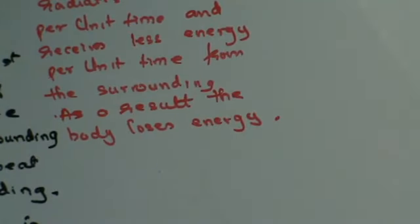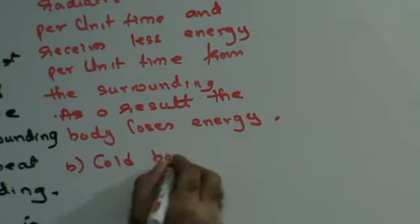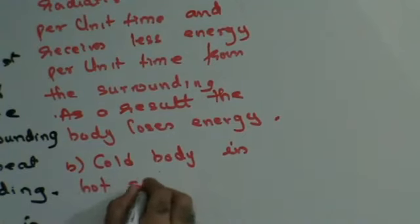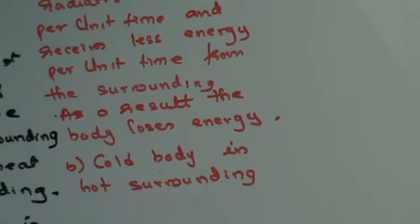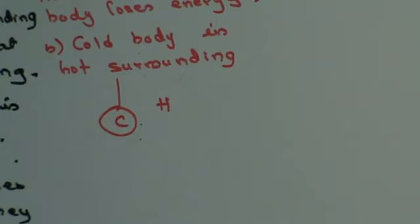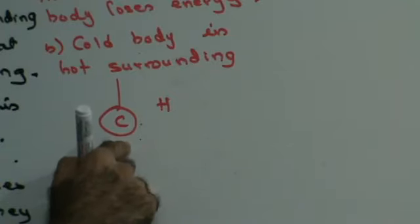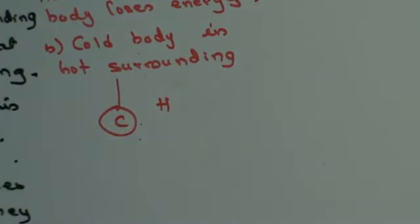Second condition: a cold body in a hot surrounding. What will happen when a cold body is kept in a hot surrounding? The temperature will rise because it will absorb heat faster than it will radiate heat. Since it is at a lower temperature, it will radiate less heat and it will absorb more heat, and as a result the temperature will rise.